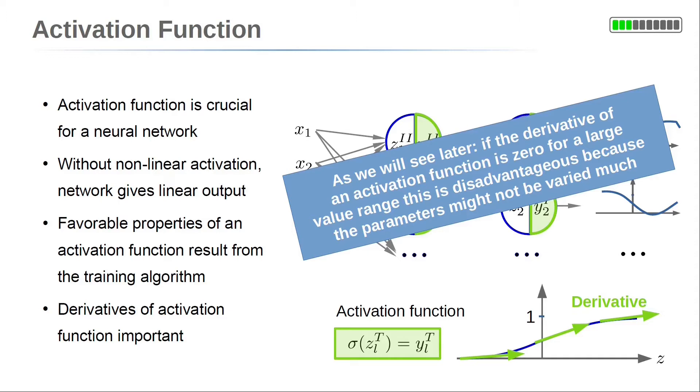as we will see later in this lecture, if a derivative of an activation function is zero for a large value range, this can be disadvantageous. The trainable parameters might not be able to vary much in a gradient-based optimization step.